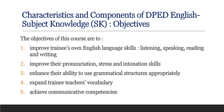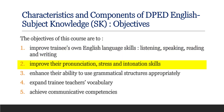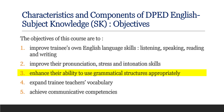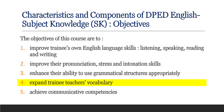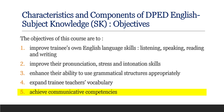Now we are going to see what are the characteristics and components of English SK — that means the Subject Knowledge part. The objectives of this course are: to improve trainees' own English language skills — that means listening, speaking, reading and writing skills; to improve their pronunciation, stress and intonation skills; to enhance their ability to use grammatical structures appropriately; to expand training teachers' vocabulary; and to achieve communicative competencies.